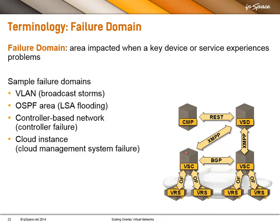Before going into the discussion of availability zones, let's define the failure domain first. It's really hard to find a good definition, and this is the best one I've found: a failure domain is an area impacted when a key device or service experiences problems. Examples might be a VLAN when you get a broadcast storm — so a single VLAN is a single failure domain — or an OSPF area.